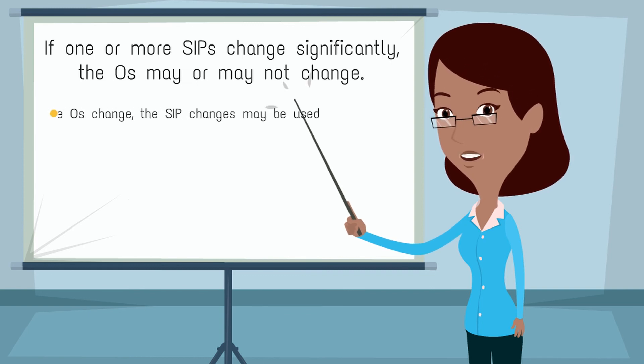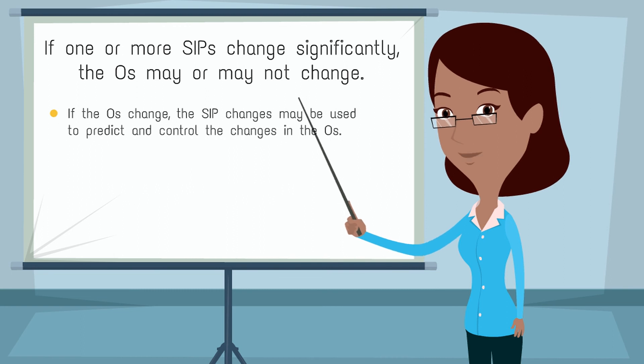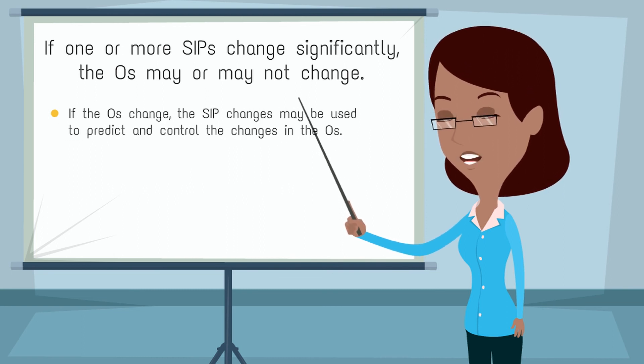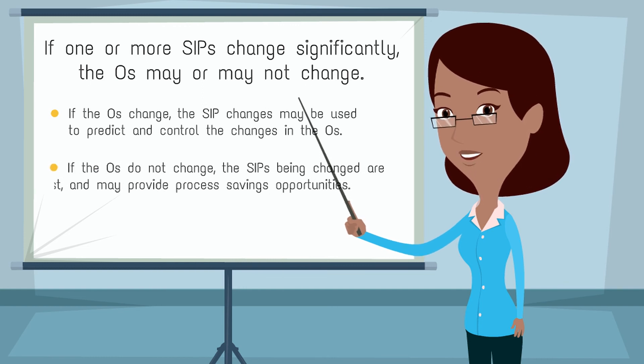If the O's change, the SIP changes may be used to predict and control the changes in the O's. If the O's do not change, the SIPs being changed are robust and may provide process savings opportunities.